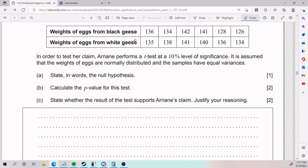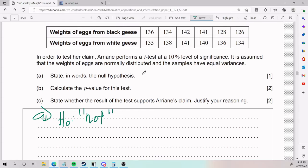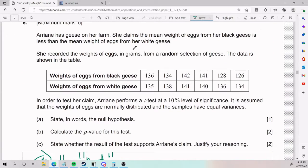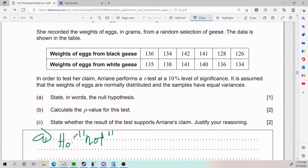So now we need to state in words the null hypothesis. There's a couple ways to approach this. My general hint is to always use the not, so the not whatever they tell you. In this case, they tell us she claims the mean weight of eggs from her black geese is less than the mean weight of eggs from her white geese.